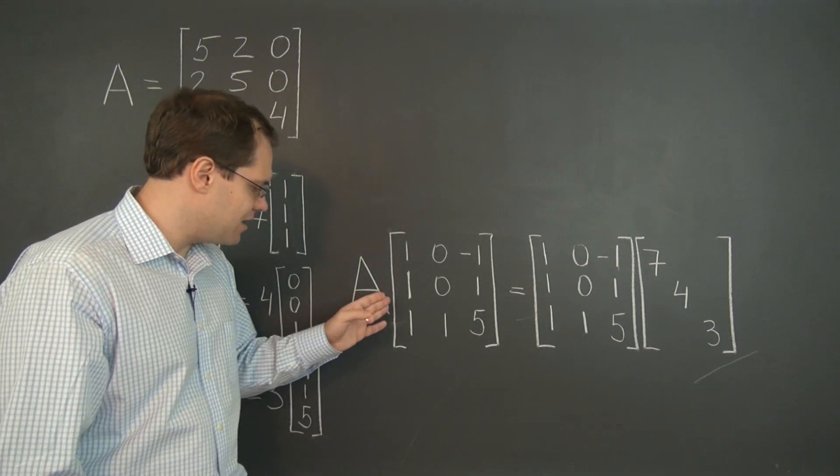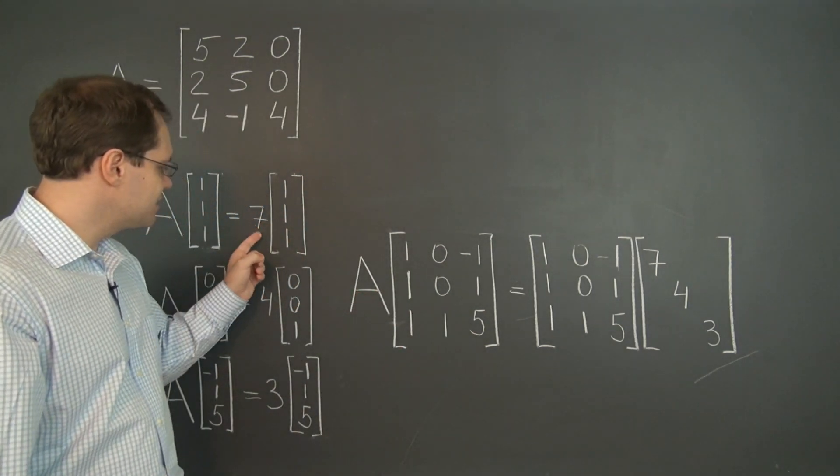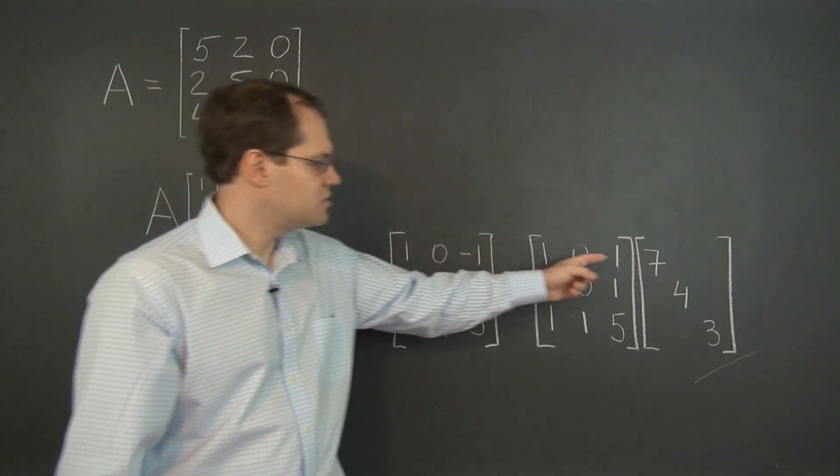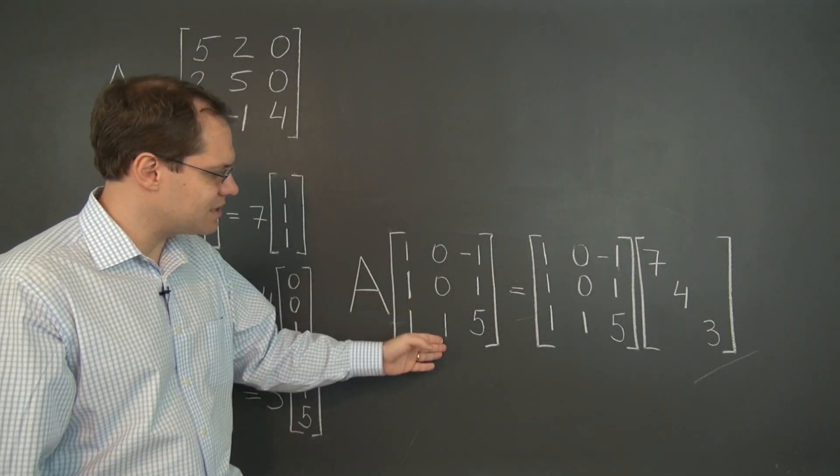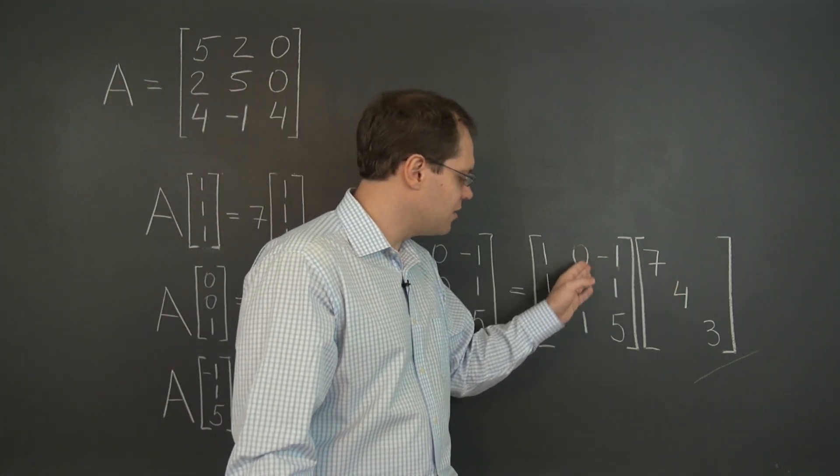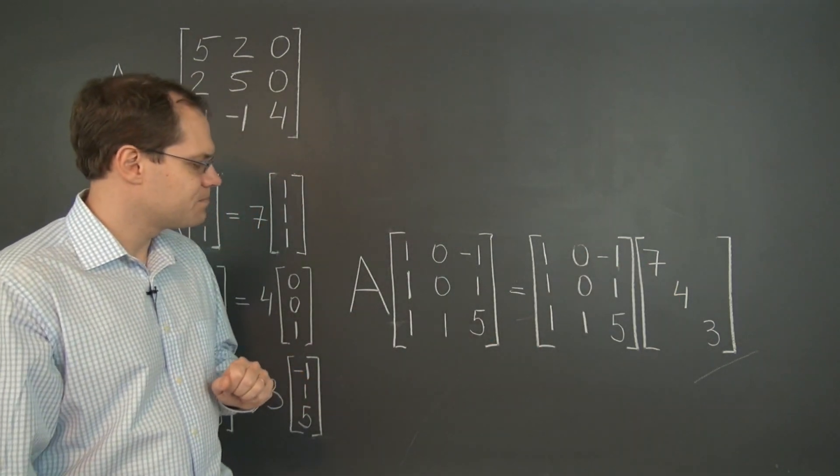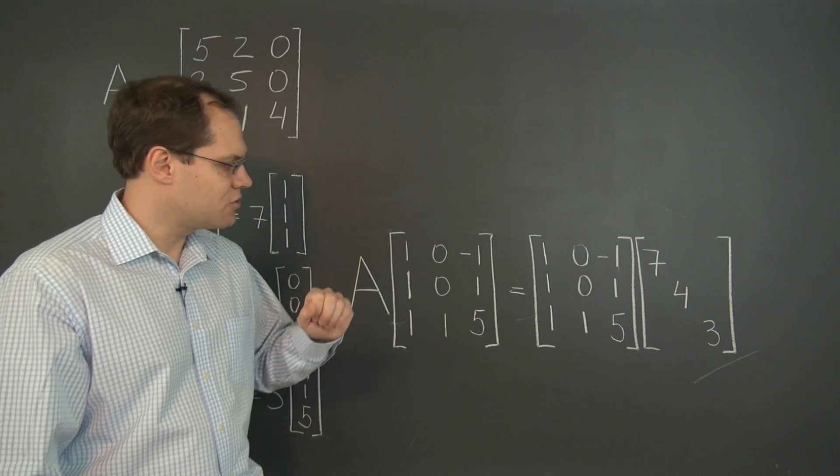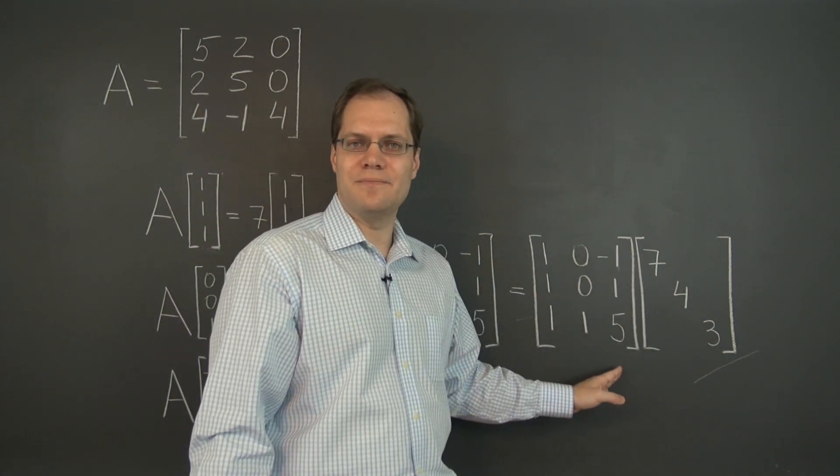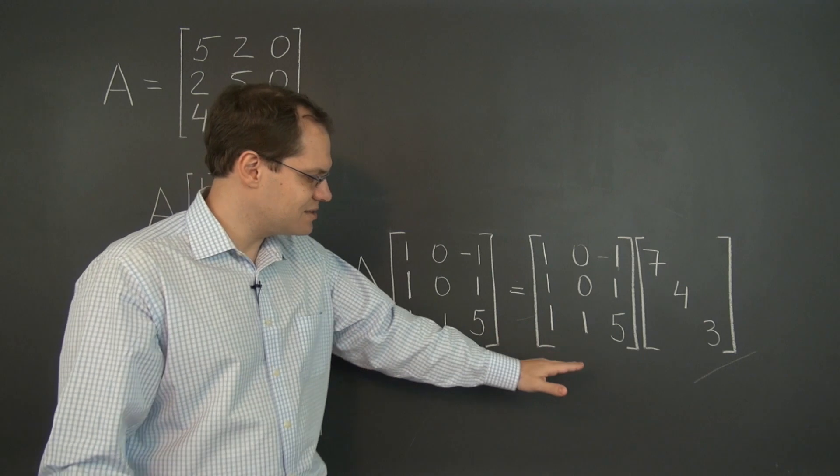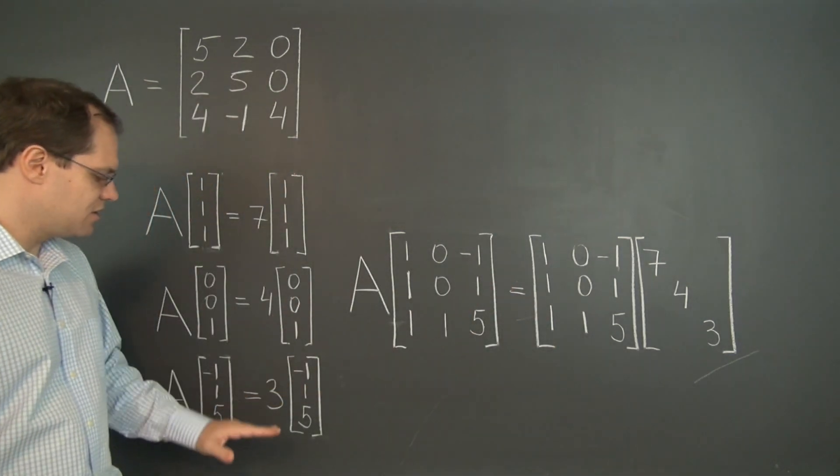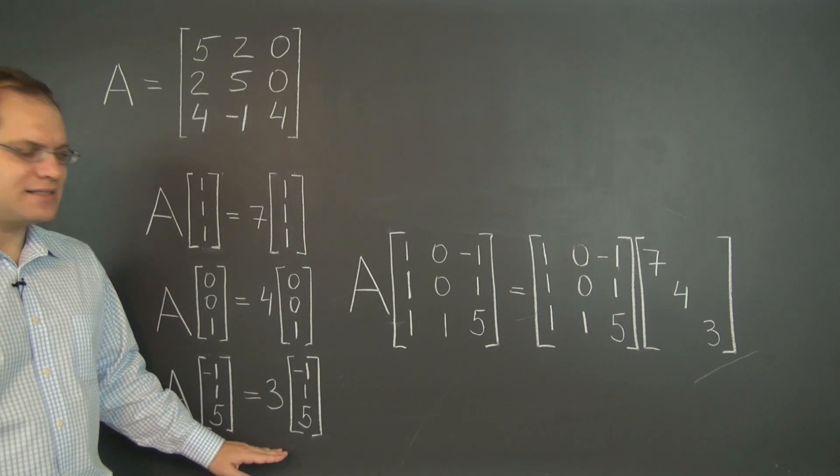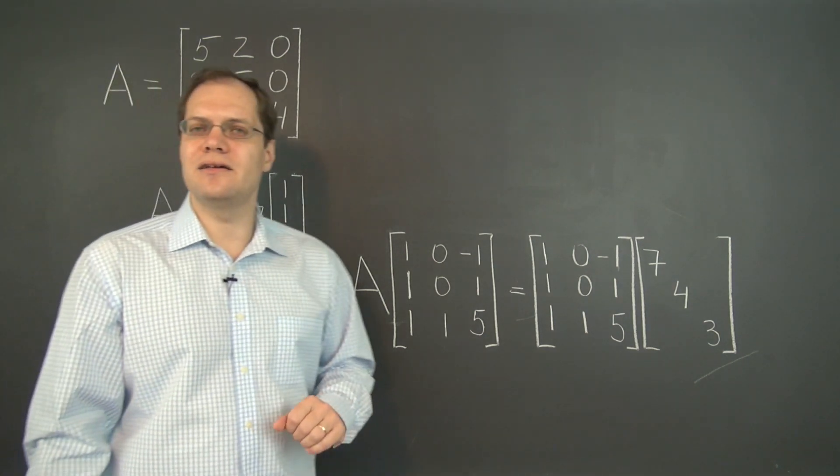We know that the result of A times the first column is seven times the first column. So seven times the first column. And A times the second column is four times the second column. And finally, A times the third column is three times the third column. So indeed, this one matrix identity does capture these three vector identities in a single equation.